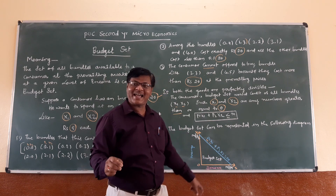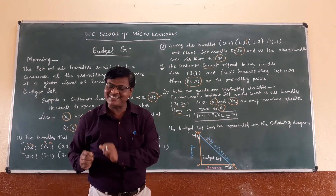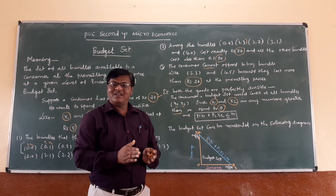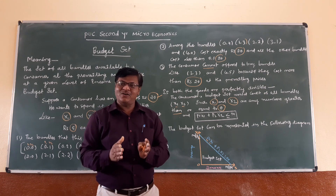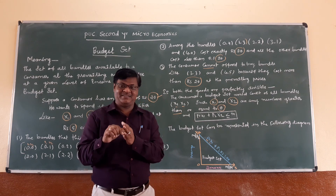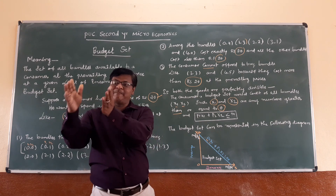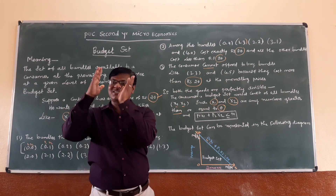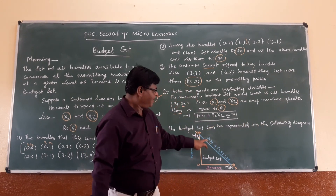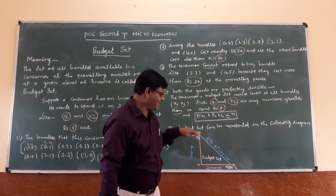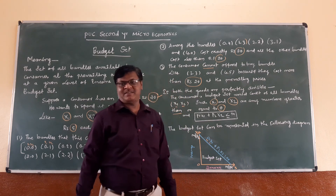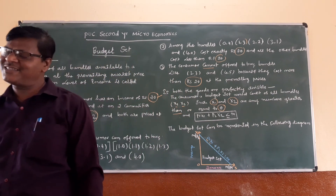So the budget line slopes downward from left to right. It indicates that p1·X1 plus p2·X2 equals Y — the prices of X1 and X2 combined equal the consumer's income Y. So the price line or budget line slopes downward. The budget set can be expressed as p1·X1 plus p2·X2 is less than or equal to Y. This is the budget set.